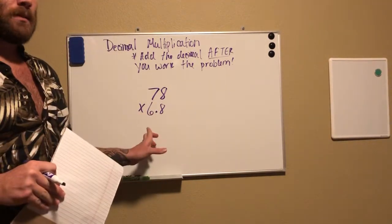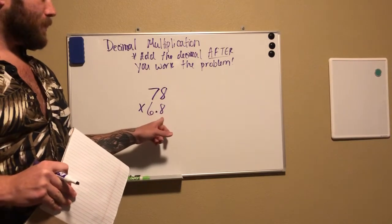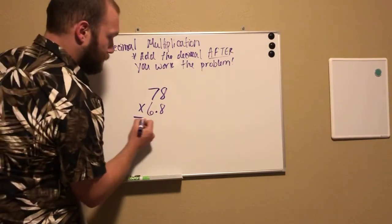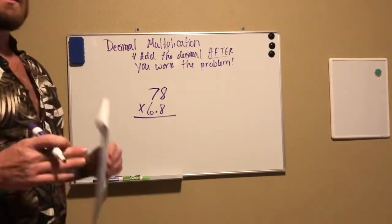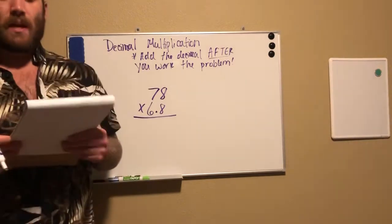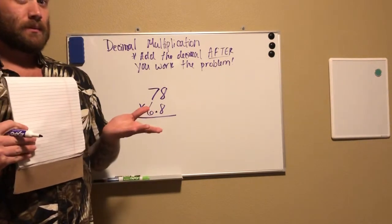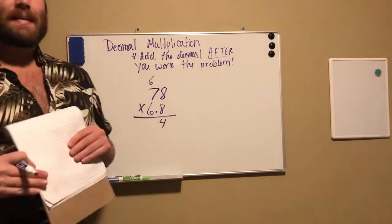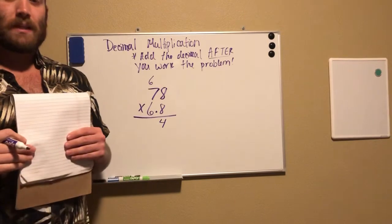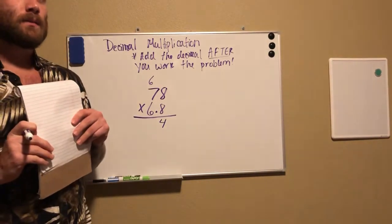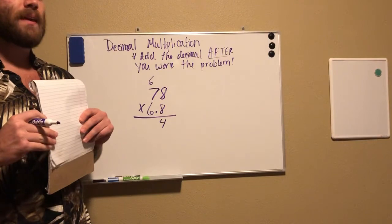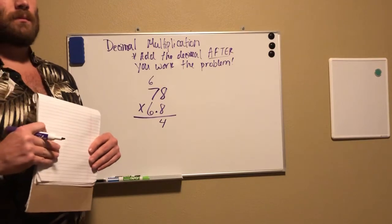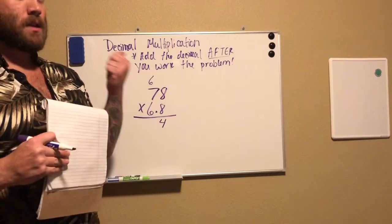Our first step: eight times eight, everybody, what is it? That's right, sixty-four. Next up, eight times seven, what is eight times seven? Think about it. Ready, go. Yes, 56. So 56 plus 6: 57, 58, 59, 60, 61, 62. So we have 62.